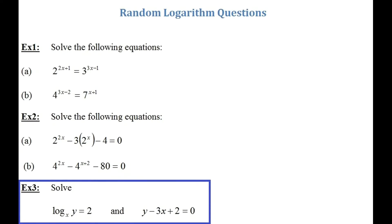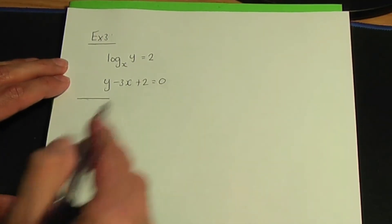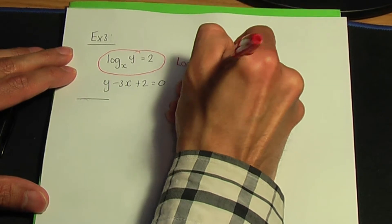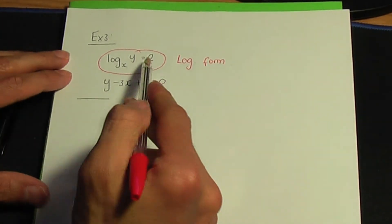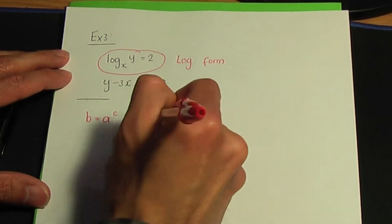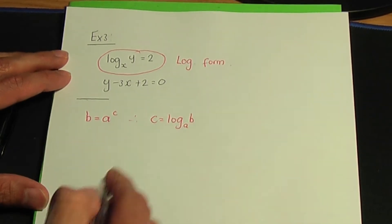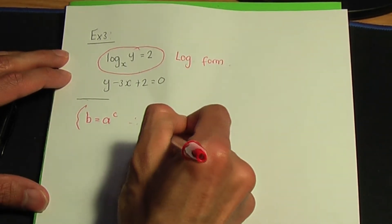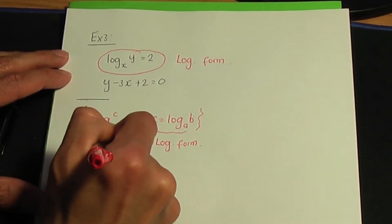Example 3: solve the simultaneous equations log base x of y = 2 and y − 3x + 2 = 0. One equation is in logarithmic form. I'll convert it to index form using the result: if c = log base a of b, then b = a^c. Comparing, a = x, b = y, c = 2, so the index form gives y = x².